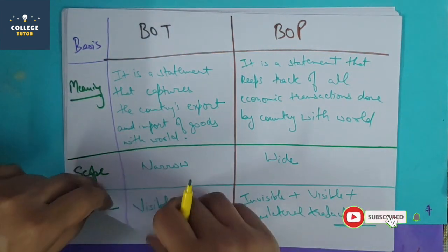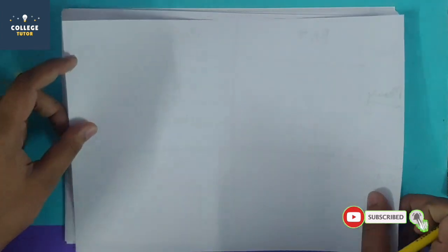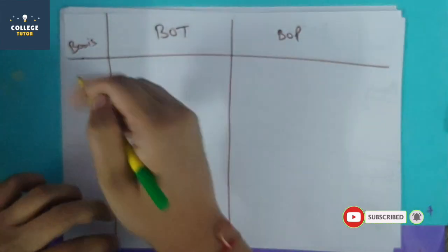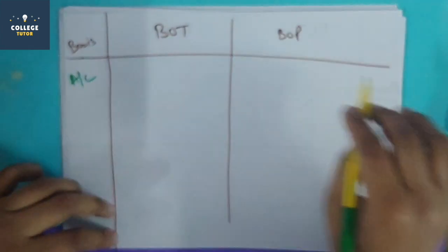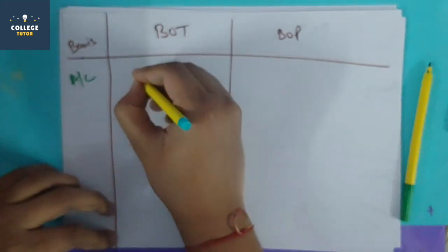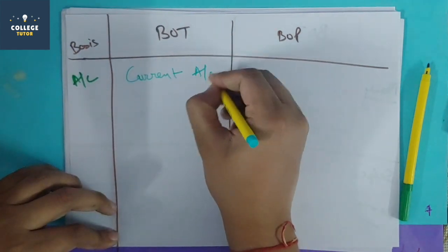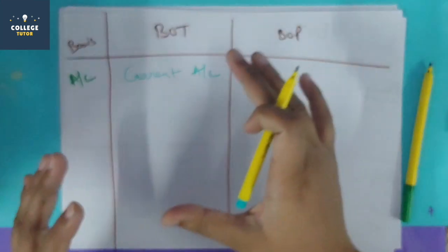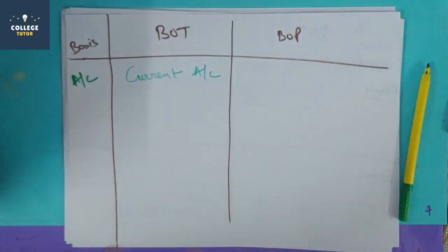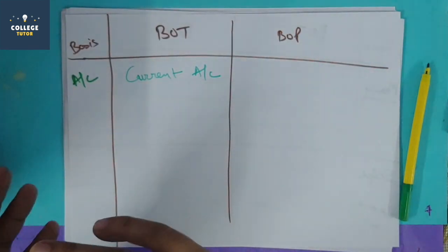Let's move on. In which accounts are maintained - balance of trade only maintains current account. In current accounts, all the goods transactions are coming, whatever goods transactions are coming, all in current accounts.